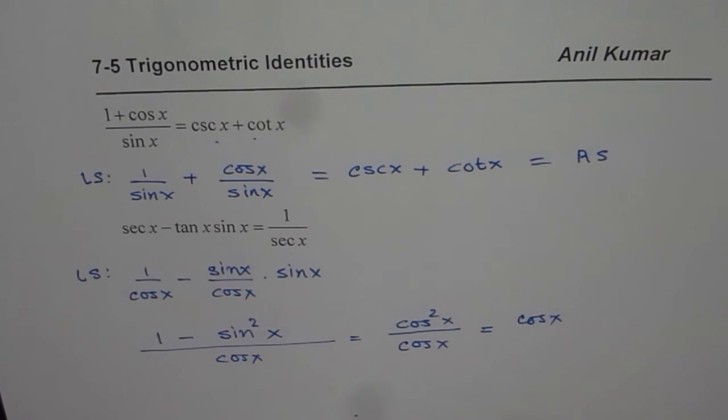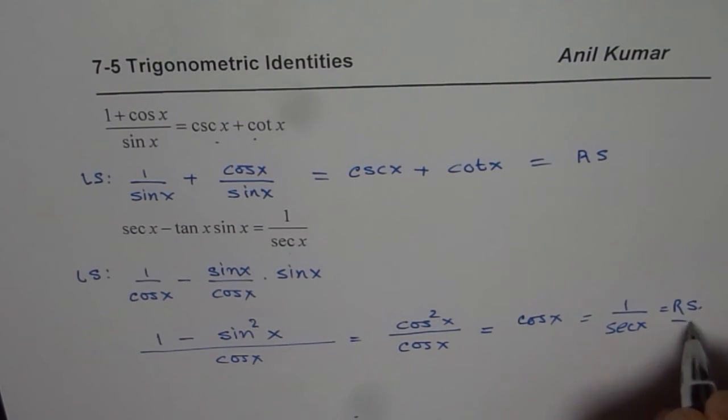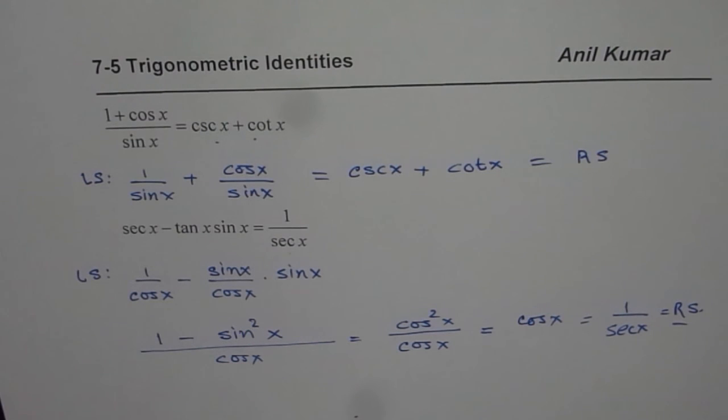What do you need? 1 over secant x and cos x could be written as 1 over secant x. So that is the right side. So that is how you can actually prove your identities very easily.